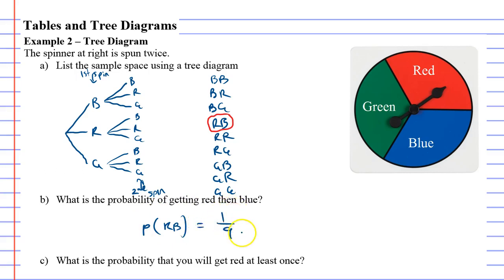Question C: What is the probability that you will get red at least once? Okay, so that really can be quite a few of them. We'll do this in green. Blue then red - they got red at least once. Red then blue - also they got red at least once.